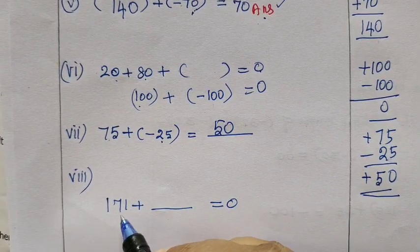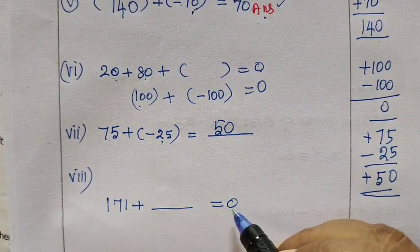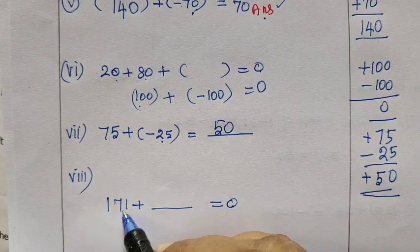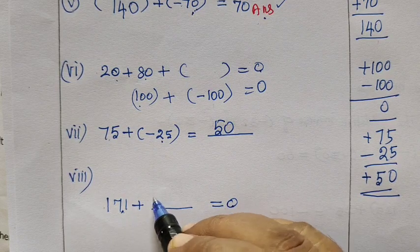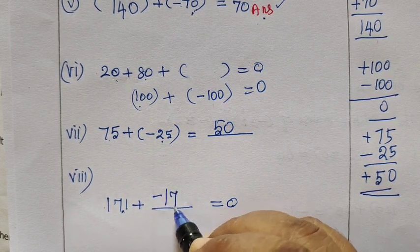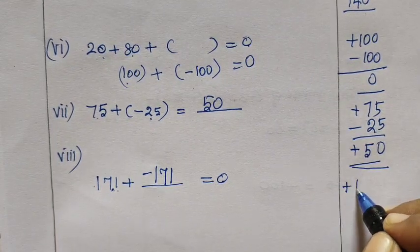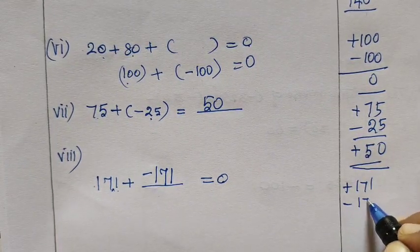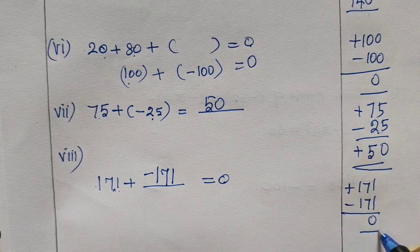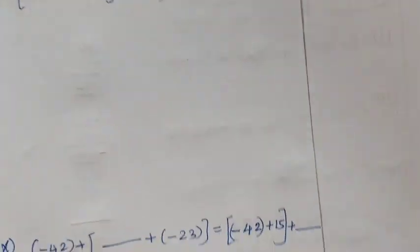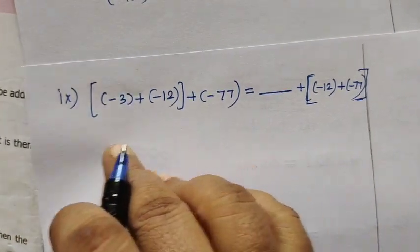Then 171 plus 0. Here 0 means this is additive inverse. Plus 71 means you are writing minus 171. So plus 127. 171 minus 171 is 0. So if you want to write it, you will write it in question number 9.